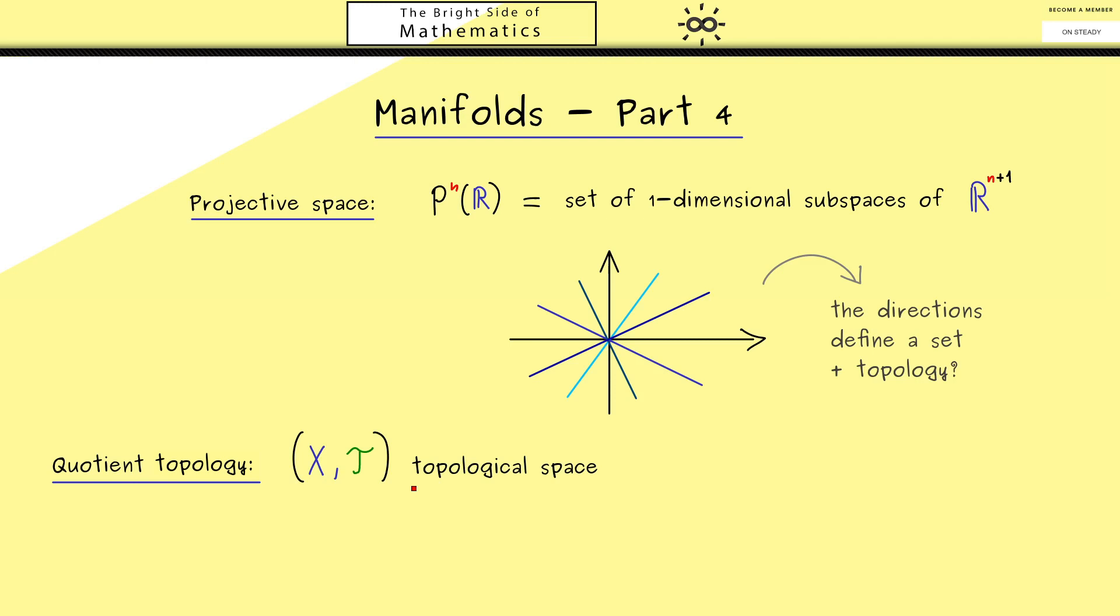So maybe it sounds complicated, but you will see it's a very natural construction. We just need two ingredients. First, a topological space given by a set X and a topology τ. And in addition, we need an equivalence relation on X, denoted with a tilde.